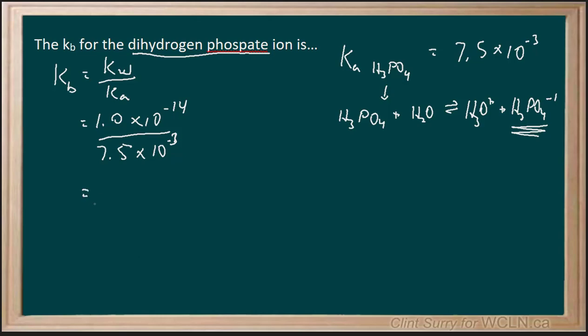I divide that and I end up left with 1.3 times 10 to the minus 12. So our KB for dihydrogen phosphate ion will be 1.3 times 10 to the minus 12.